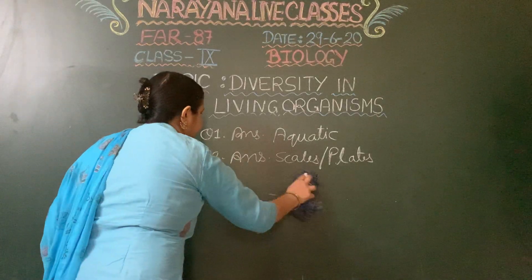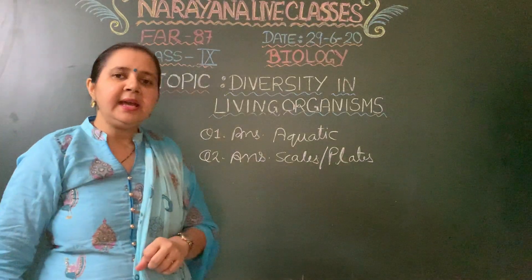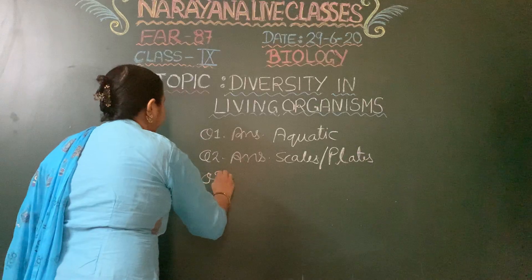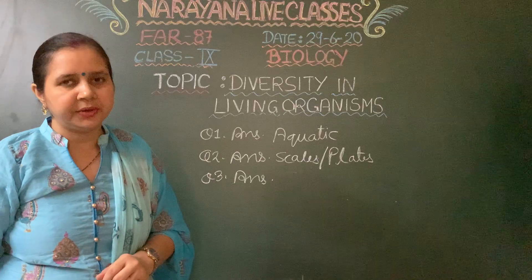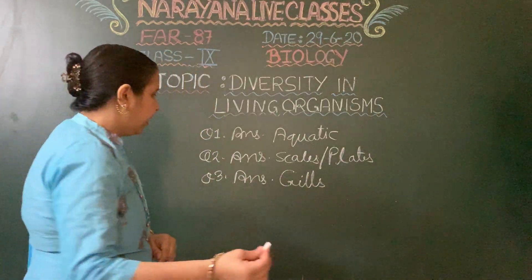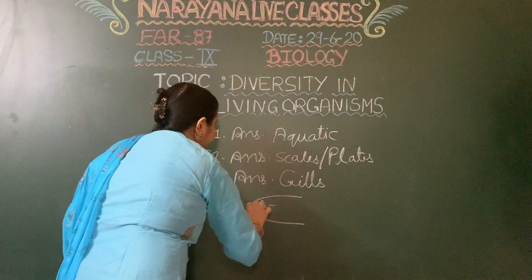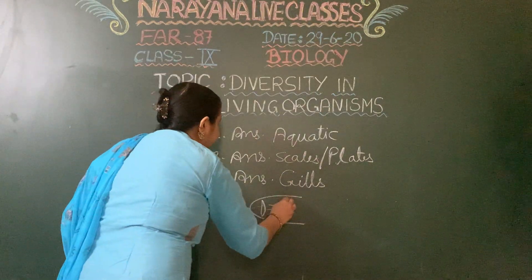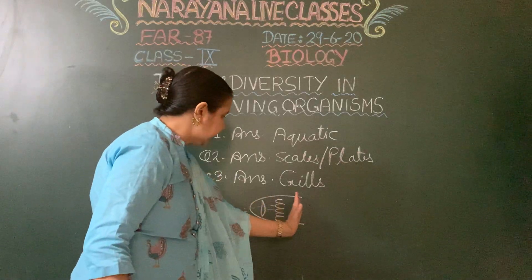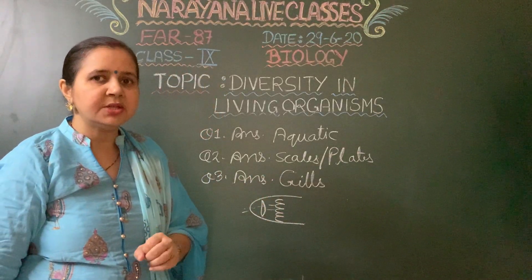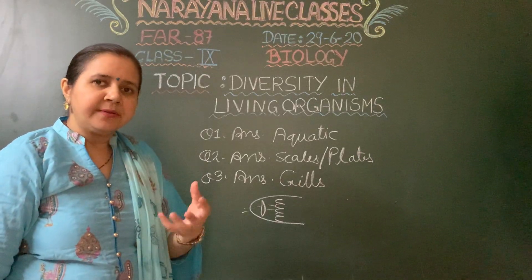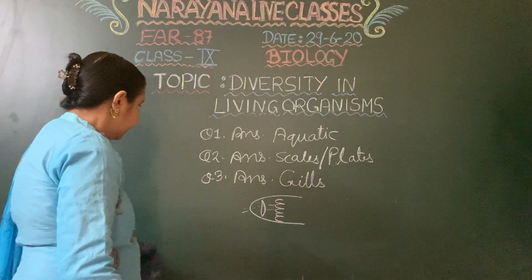Question number 3 asks: since fishes live in water, they obtain oxygen dissolved in water by dash. The answer is they obtain oxygen by gills. Water enters through the mouth, and gills are present in the form of fine filaments called gill slits. When water passes through these gills, the dissolved oxygen is absorbed.